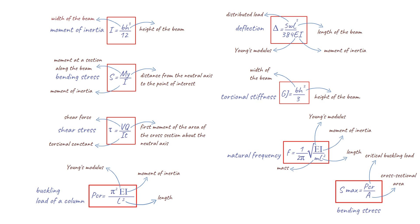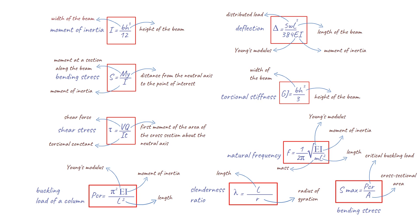Continuing on, we have the formula for slenderness ratio of a column. This is represented by the equation where L is the length of the column and r is the radius of gyration of the cross-sectional area of the column. This formula is used to calculate the slenderness ratio of a column, which is a measure of its stability under a load.